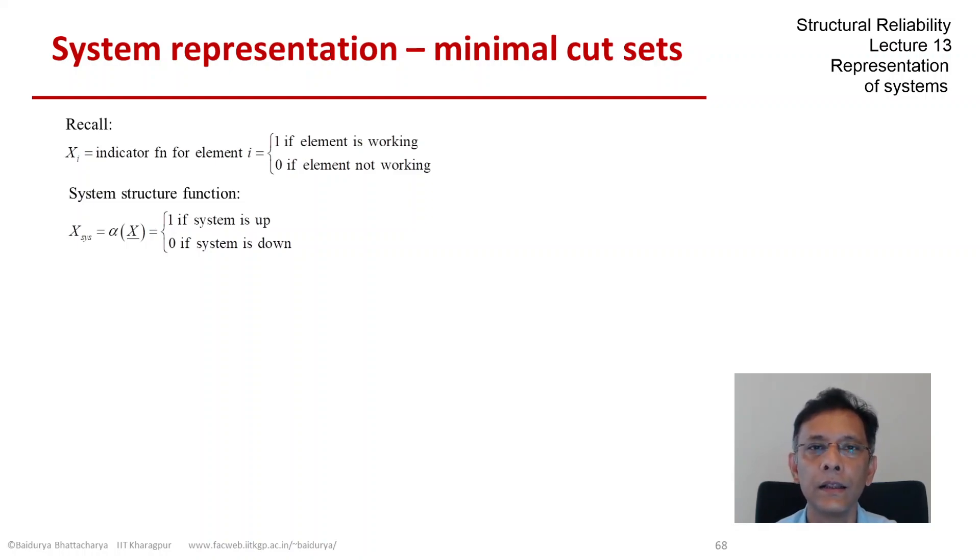The minimal cut sets let us write out the system structure function in a very intuitive manner. Recall that x is the indicator function for an element and the system structure function relates the system outcome 1 or 0 in terms of the element outcomes. We would like to express alpha, the system structure function, in terms of the minimal cut sets that we identify for the system.